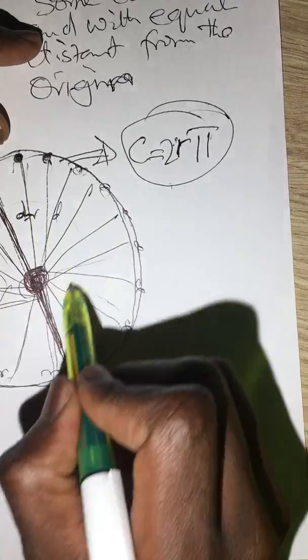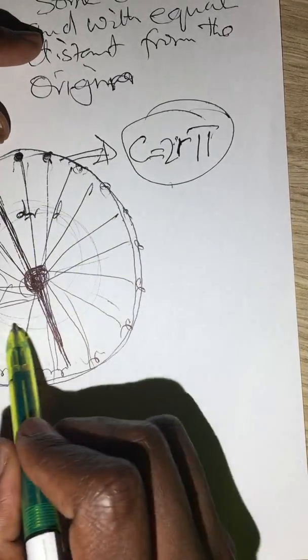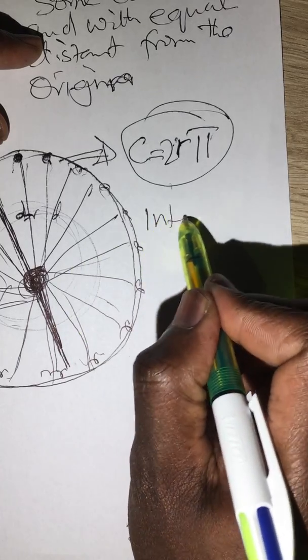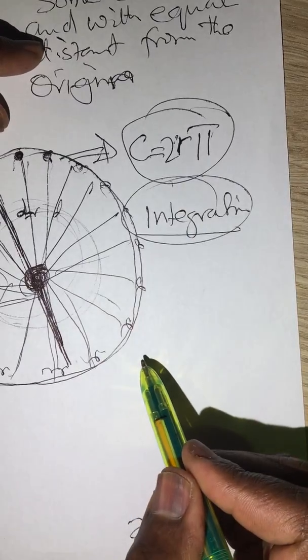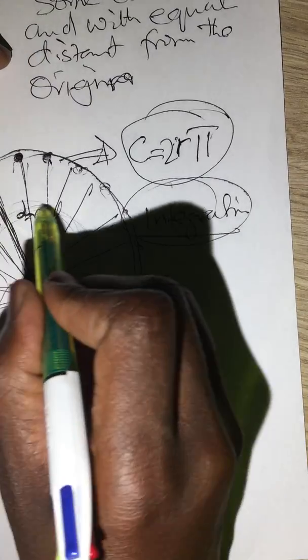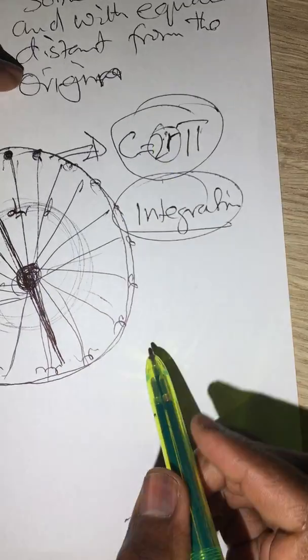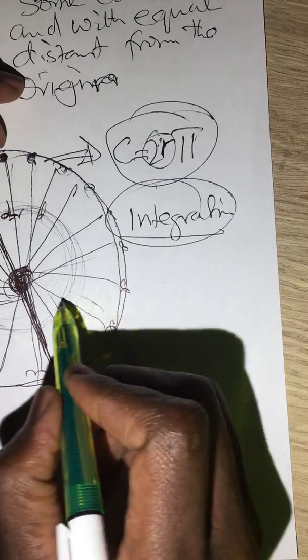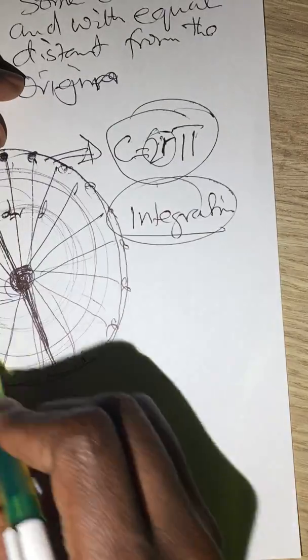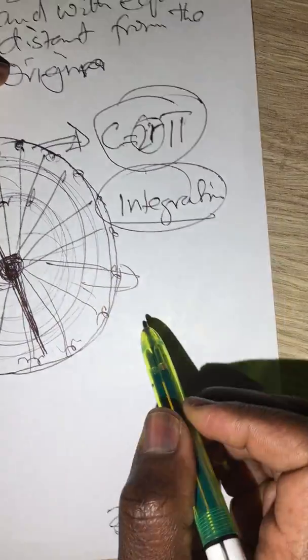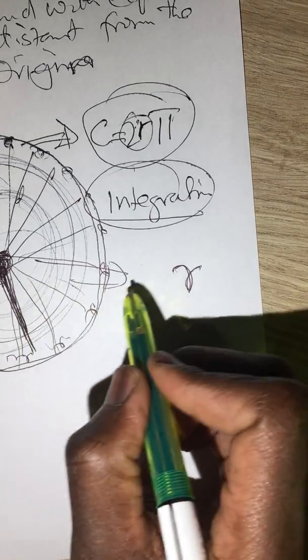So this addition or additional lines that you bring in, there's a term called integration, integration in calculus or pure maths. So you are integrating the radius. That's why if you consider all the area under the circle, you will come up with something like R.